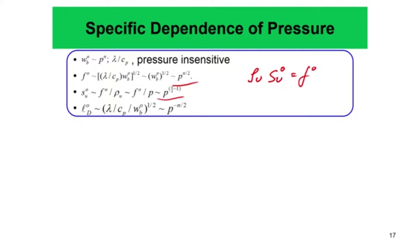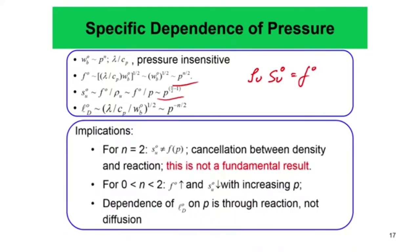The 0 subscript denotes standard parameters for a planar laminar premix flame in a doubly-infinite domain. Interestingly, the flame thickness L_D decreases with pressure because of reaction, not due to diffusion — reaction rate actually causes the diffusion zone thickness to decrease. That is one very interesting thing to note.